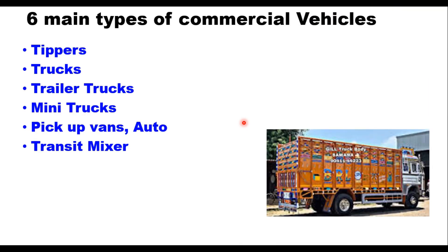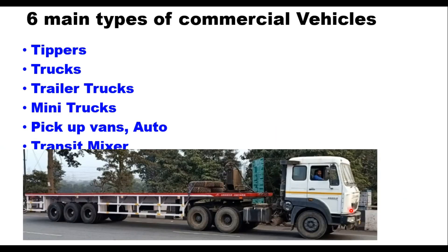There are several types of trucks. This is the standard truck where the front axle contains two wheels, one on either side, and the rear axle has four wheels, two on either side. Then there can be trailer trucks also, where you have a truck unit and a trailer unit separately, and there can be different wheel configurations for a truck-trailer depending upon its size.